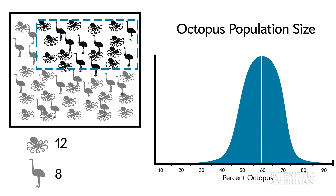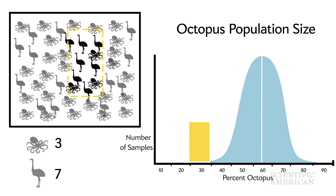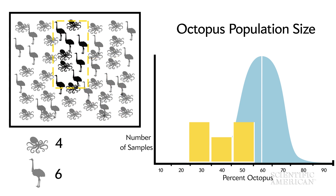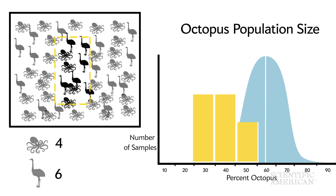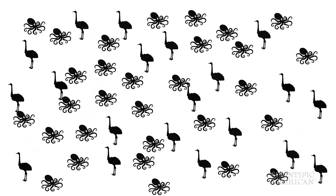But there's also another form of error: systematic error. We might be sampling in a way that accidentally captures too many ostriches, or samples the same group over and over, counting the same individual more than once. It can get complicated.